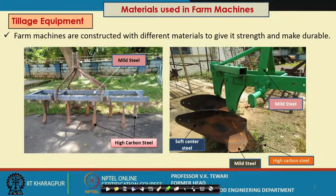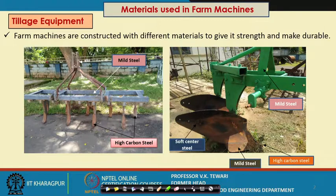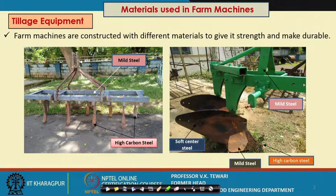Let us think of the materials for tillage equipment. The equipment used for tillage includes moldboard plow, disc plows, cultivators, harrows, and rotavators. Looking at the type of materials used for a cultivator: the tines — specifically the double-edged shovels — are made of high carbon steel, while the frame along with the three-point linkage is made of mild steel.